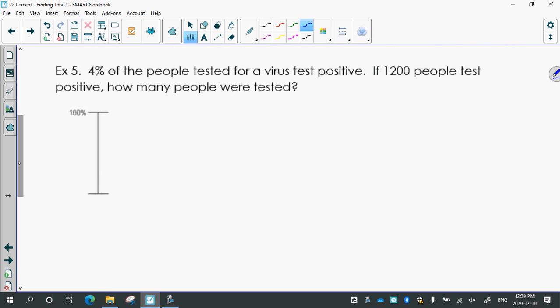4% of the people tested for a virus test positive. So 4% is pretty low to the bottom here. So that's 4%. If 1,200 people test positive, so 1,200 is that 4%, how many people were tested? What's the total number of people tested? So again, if you can make your diagram, then your proportion is pretty much made for you. We just have to convert it. 100 over 4 is equal to x over 1,200.